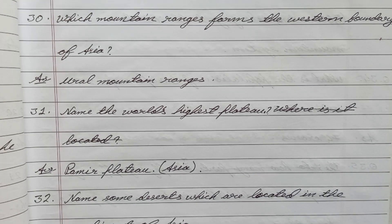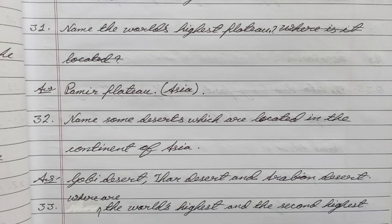Question 31: Name the world's highest plateau. Answer: Pamir Plateau. Question 32: Name some deserts which are located in the continent of Asia. Answer: Gobi Desert, Thar Desert, and Arabian Desert.